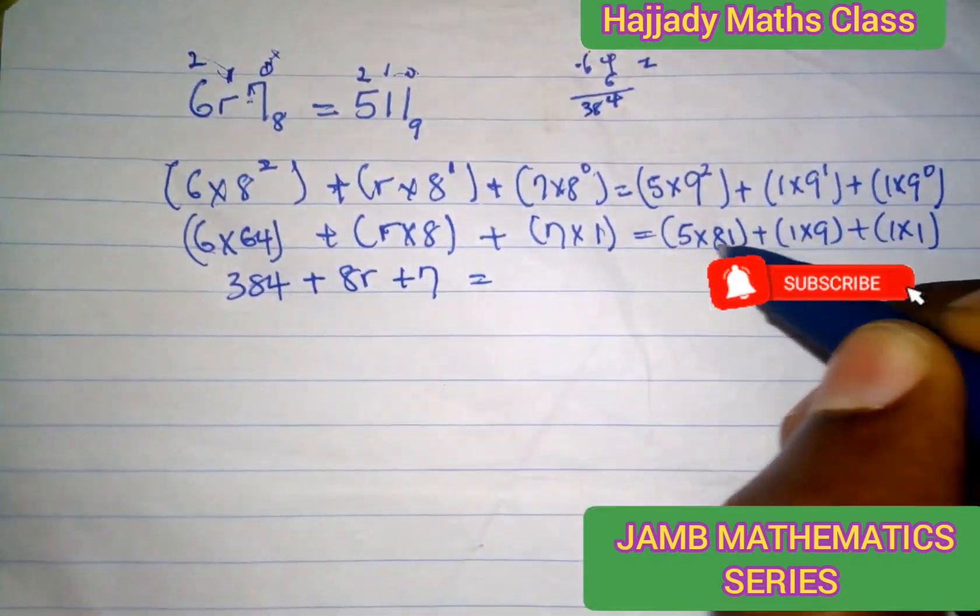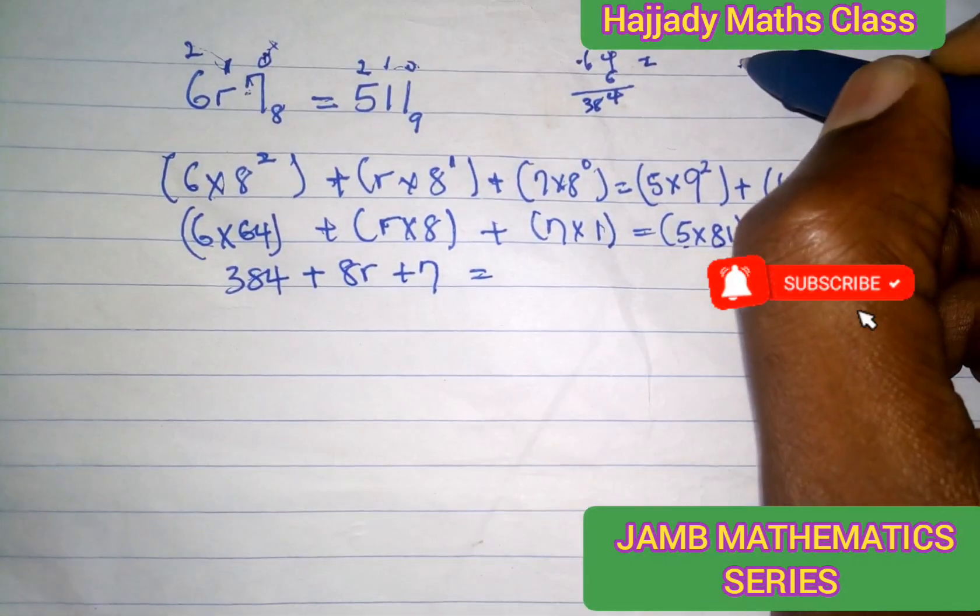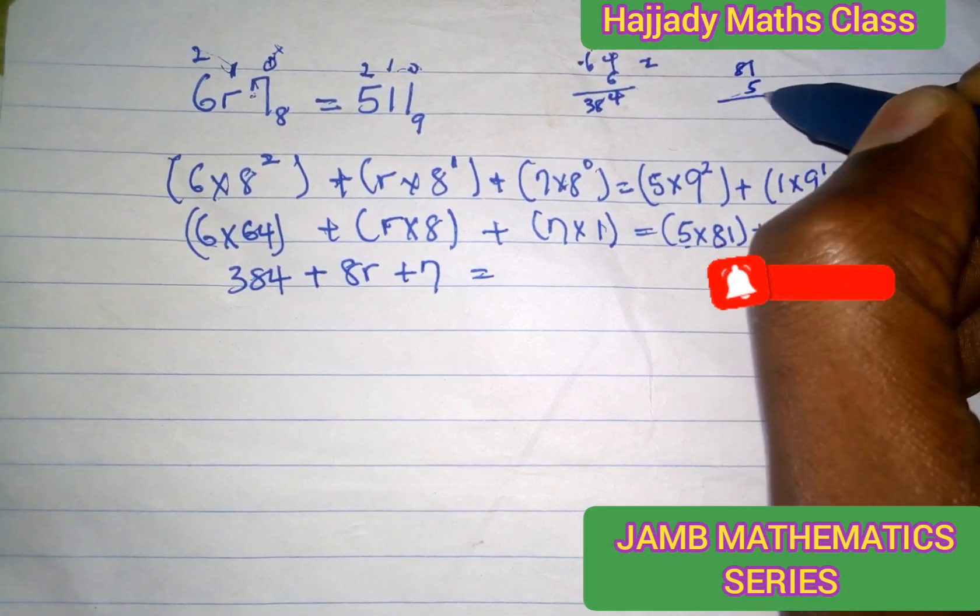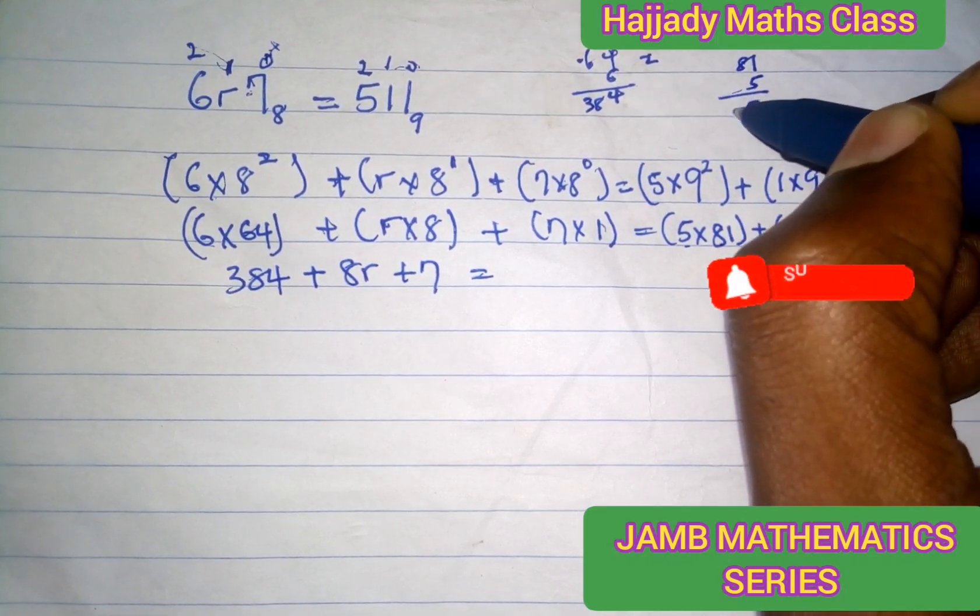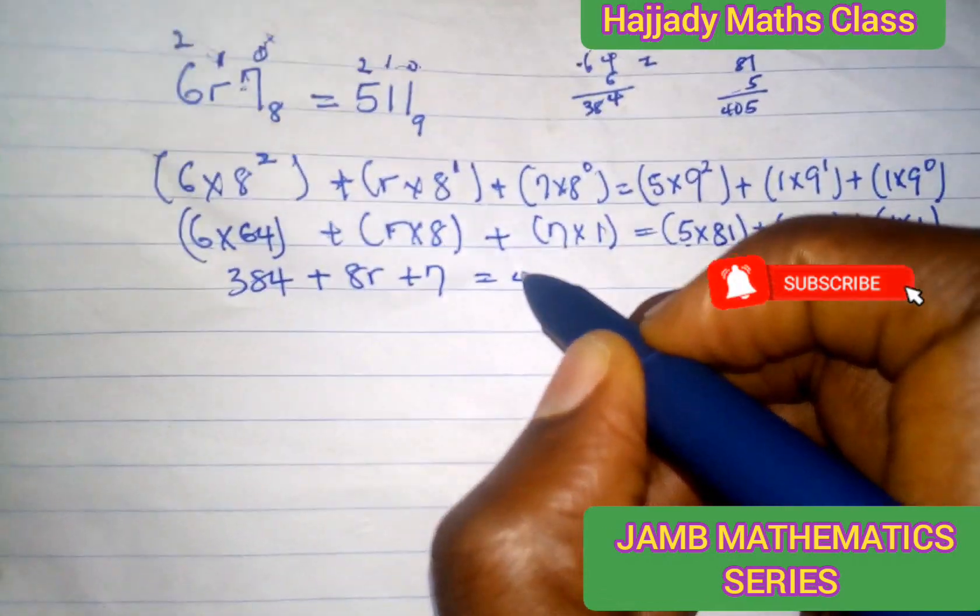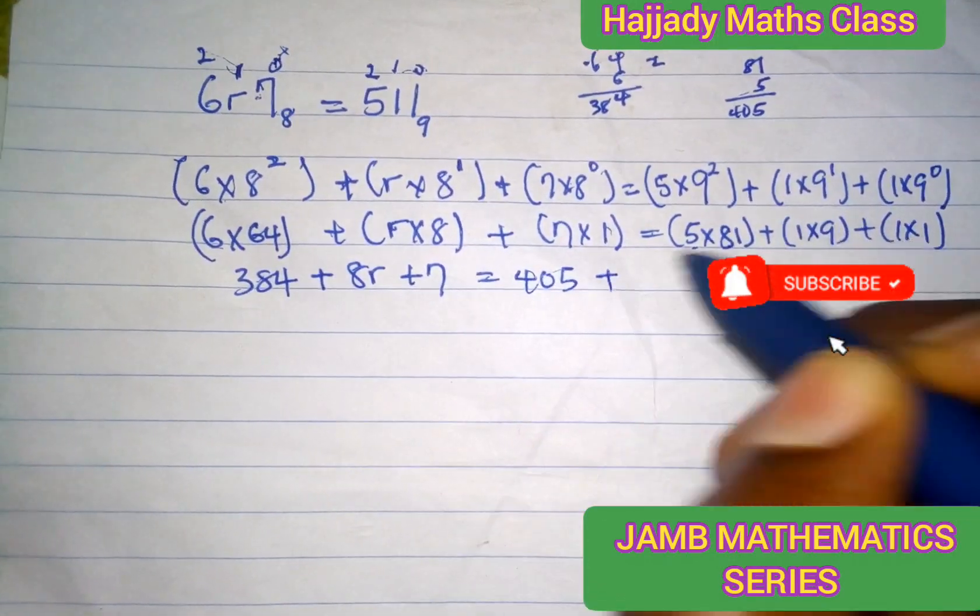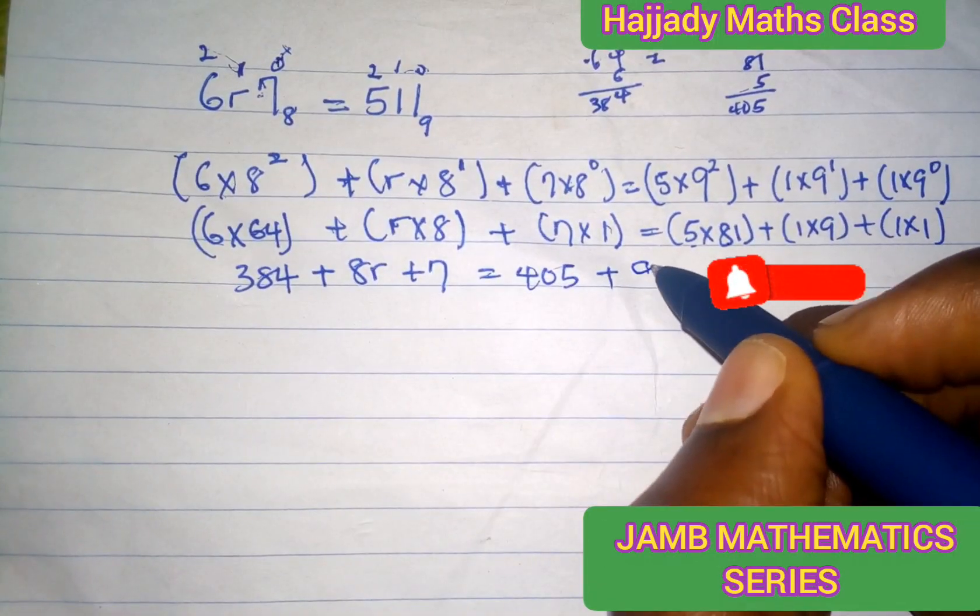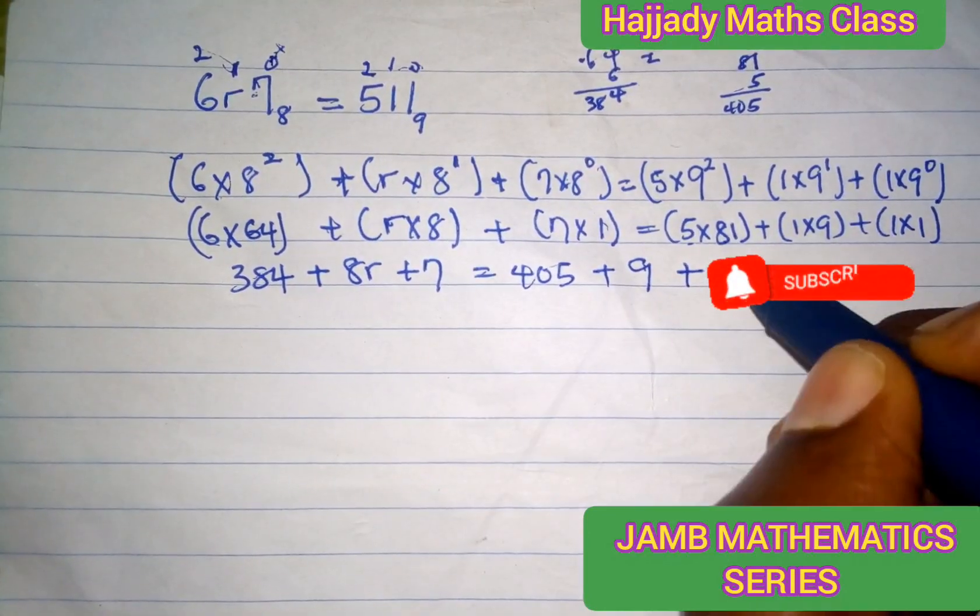This equals 5 times 81. You can do that here: 81 times 5, 5 times 1 is 5, 5 times 8 is 40. So we have 405 plus 1 times 9 gives 9, plus 1 times 1 gives 1.